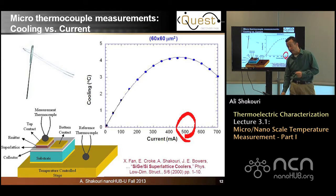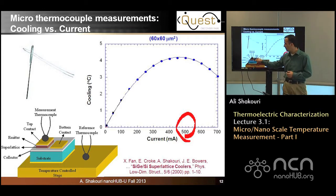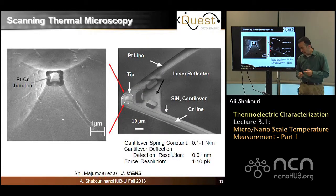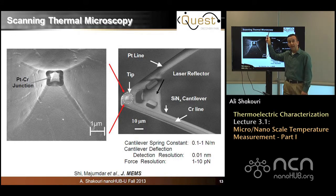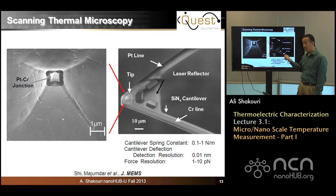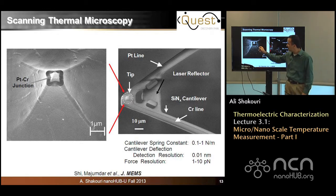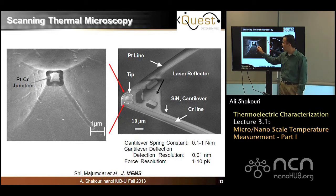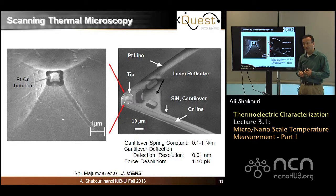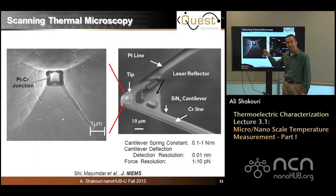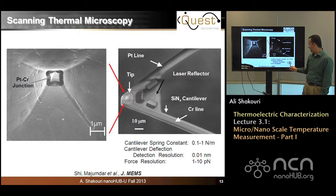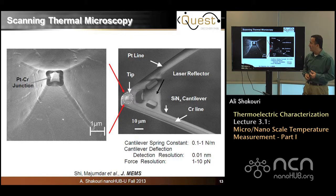One issue is that this thermocouple is as big as the device — I can only measure one data point for the whole device and cannot make a temperature image. In the early to mid 90s, people started developing scanning thermal microscopy. The idea is to take an atomic force microscope tip and at the tip, instead of having a single point, define a thermocouple junction — a contact between, for example, chrome and platinum. Any junction of two metals generates a voltage under a temperature difference, which is a good way to measure temperature. These are early works by Li Shi and Arun Majumdar in the late 90s and early 2000s.